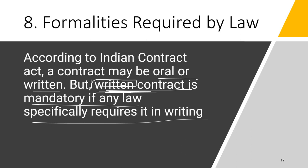One more point is formalities required by law. If law requires you to follow certain formalities for your contract and you are not following them, it will not remain a valid contract. The Indian Contract Act allows a contract to be oral or written — there is no mandate that a contract must be written only or oral only. But certain contracts are required to be written, and certain contracts are required to be registered and stamped. If a contract required to be written is made orally, or if a contract required to be registered and stamped is not registered or stamped, it will not be called a valid contract because the required formality is missing.